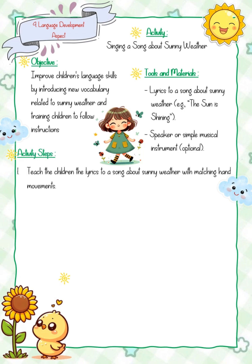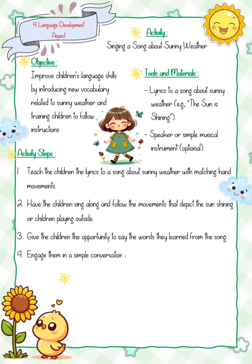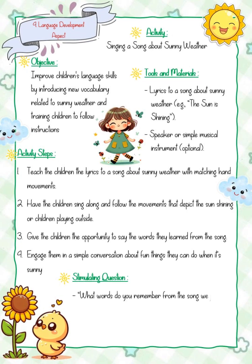Activity steps: one, teach the children the lyrics to a song about sunny weather with matching hand movements. Two, have the children sing along and follow the movements that depict the sun shining or children playing outside. Three, give the children the opportunity to say the words they learned from the song. Four, engage them in a simple conversation about fun things they can do when it's sunny. Stimulating questions: What words do you remember from the song? Can you tell me what happens when the sun is shining? Why do you think singing about the weather is fun?